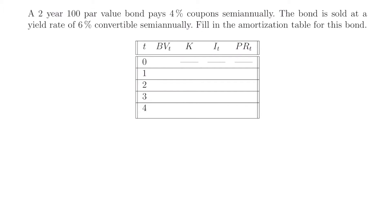The first thing you want to do when filling in an amortization table is to calculate the book value at time equals zero. For a bond, the book value at time zero is actually equal to the price of the bond. So we need to calculate the price of the bond in this example. Let's write down everything we know, and then we'll calculate its price.